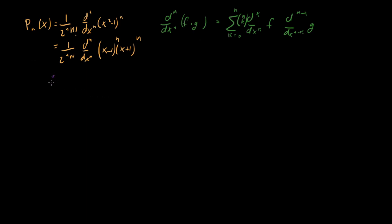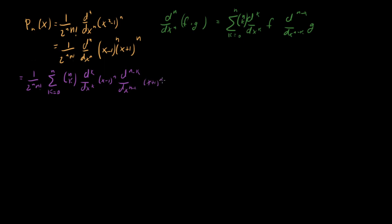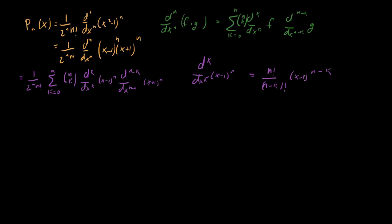Applying the general Leibniz rule, we get the sum k equals 0 to n of n-choose-k times the kth derivative of (x-1)^n times the (n-k)th derivative of (x+1)^n. The kth derivative of (x-1)^n equals n! over (n-k)! times (x-1)^(n-k). We can verify: for k equals 0, the factorials cancel and we get (x-1)^n back, which is correct.